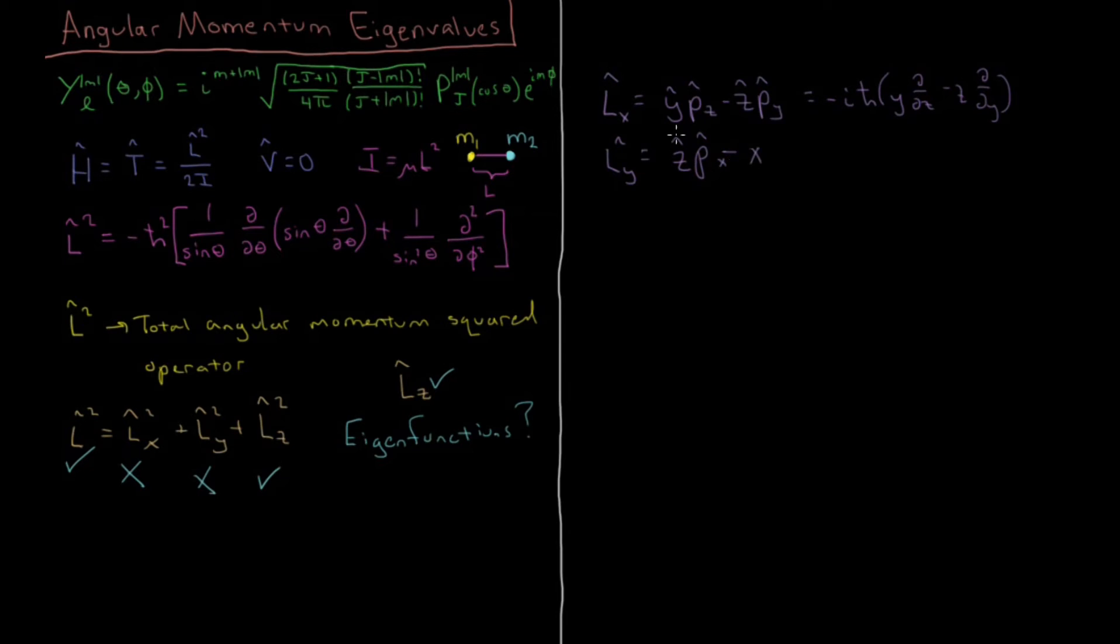And then to go to the next component we just translate around kind of the circle there. We go to Y goes to Z, Z goes to X, X goes to Y. So we get then Ly is Z Px, which is minus IH bar, Z partial with respect to X, minus X partial with respect to Z. Again, noticing that the minus IH bar has been factored out for the momentum.